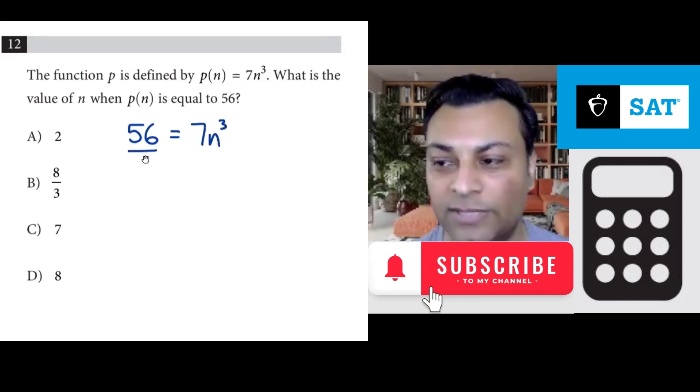So what you do is divide by 7 on both sides. You get 8 = n³. 56 divided by 7 is 8.